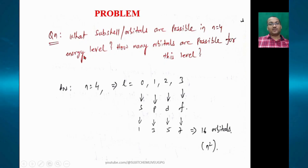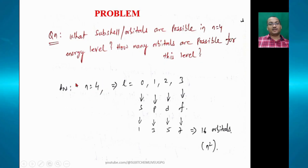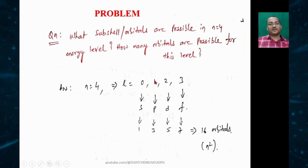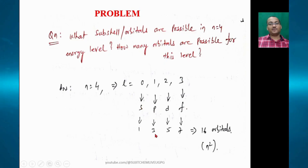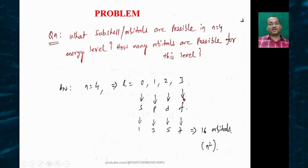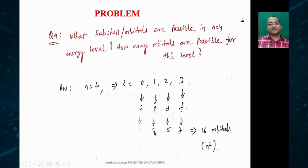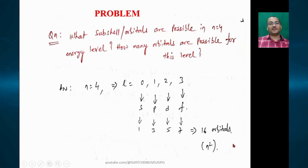What subshells or orbitals are possible in the n=4 energy level, and how many orbitals are possible? When n=4, l can be 0, 1, 2, 3 — so l=0 is s orbital (1), l=1 is p orbital (3), l=2 is d orbital (5), and l=3 is f orbital (7). Adding all: 7+5+3+1 = 16 orbitals, which equals n² orbitals.